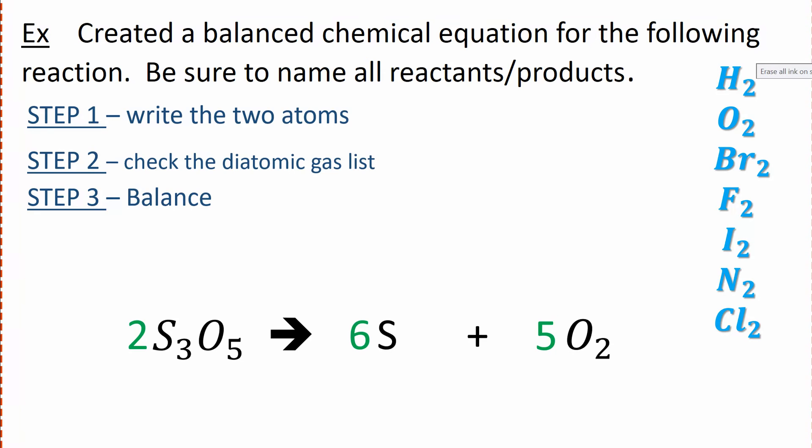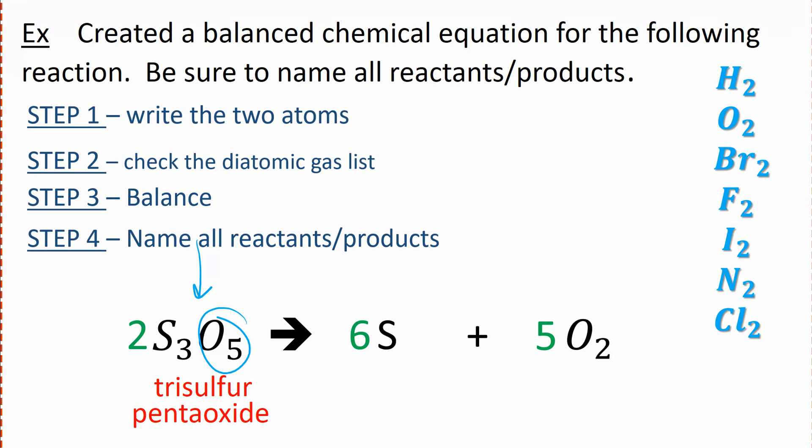Then we need to name it. Let's be careful with the naming because it's covalent. This compound is made up of three sulfurs, so we're going to call that tri-sulfur. The next part would be the five oxygens, so that's penta-oxide. And then that one is just sulfur, and that one is just oxygen gas.